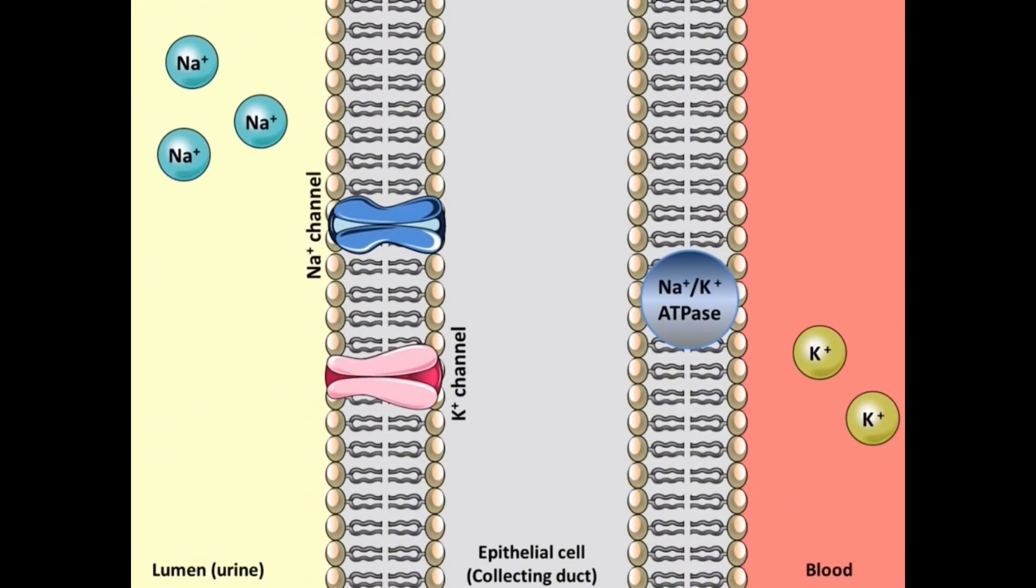This increases sodium content within these epithelial cells and the collecting duct itself, facilitating the exchange of sodium and potassium at these sites, mediated by the ATPase pump. Subsequently, potassium is secreted into the urine through potassium channels. This ongoing process continues, resulting in potassium loss and ultimately leading to hypokalemia.